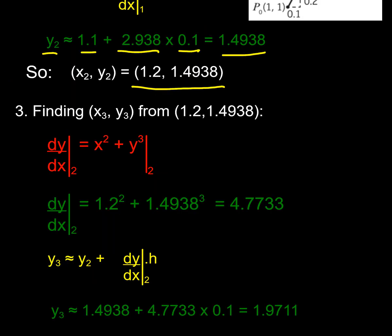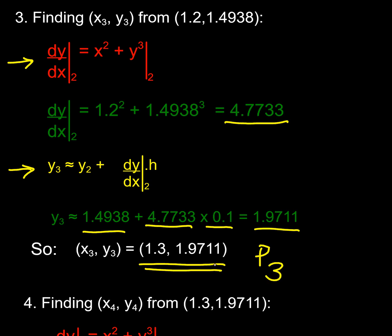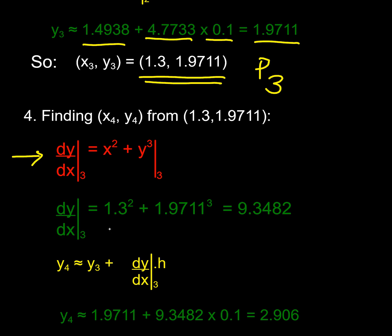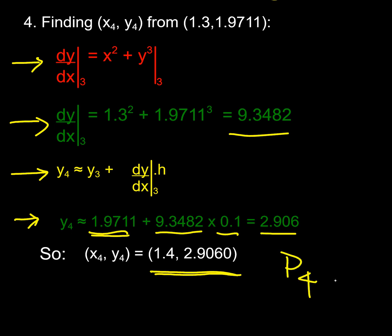And of course I can do the same thing again. To get to P3, I use my differential equation to find my gradient at P2, which is going to be 4.7. I substitute that into my Euler linearization, along with y2 and the distance I'm moving, so my new y value y3 is 1.97. I've now moved to P3 at (1.3, 1.97). Doing it again: I get the gradient at P3 as 9.3, substitute that into my Euler linearization, and y4 comes out as 2.906. So P4 is (1.4, 2.906).